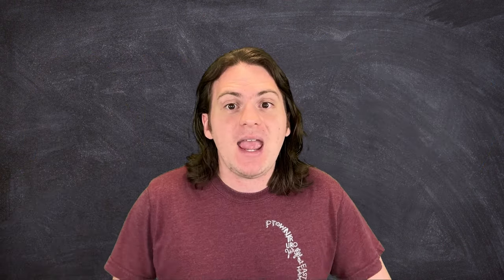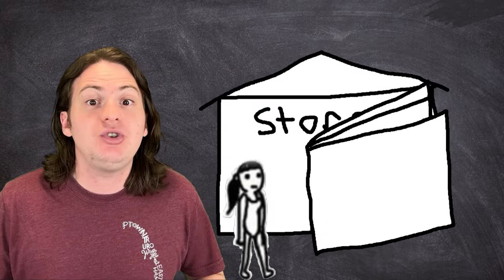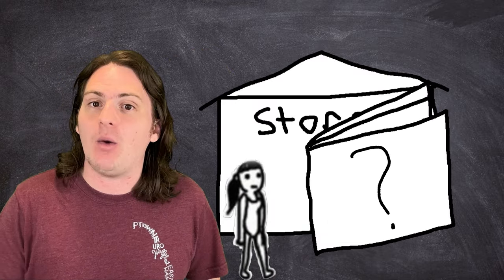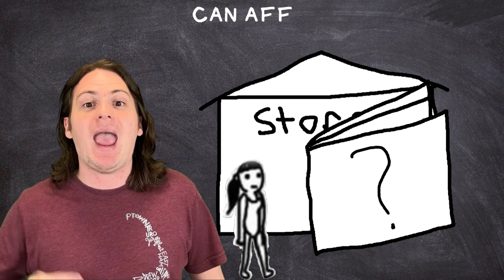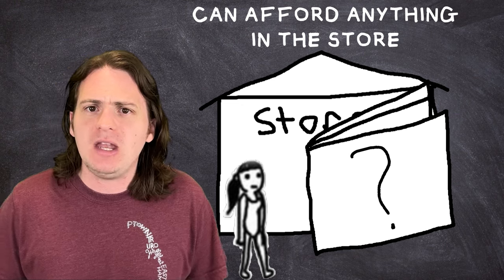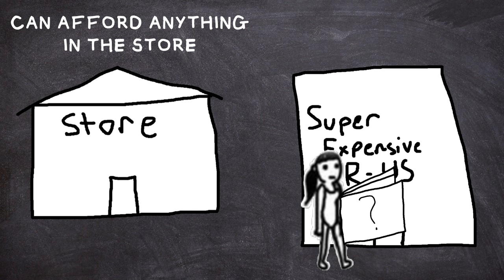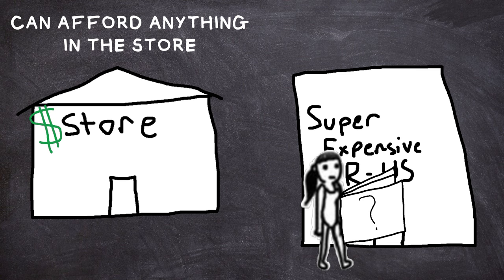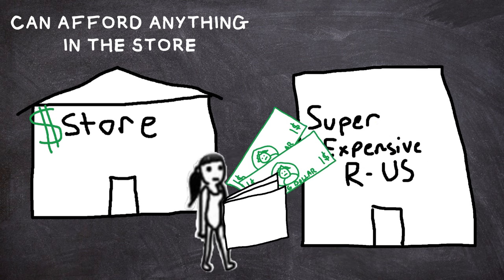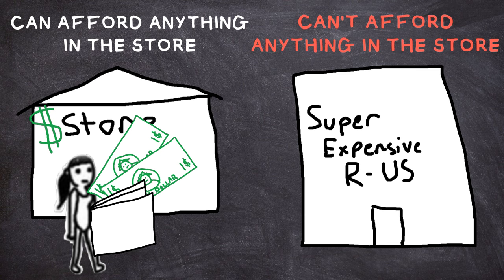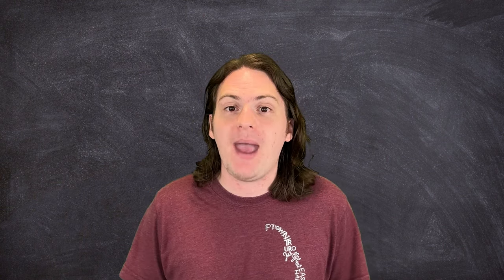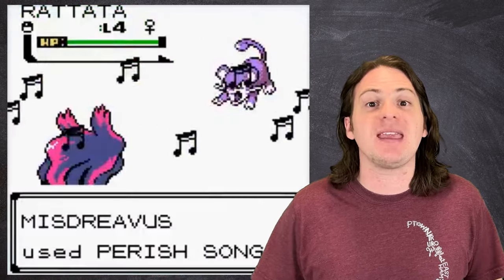Consider this example. Say I send you into a store with a wallet. You don't know how much money is in that wallet, but I tell you that it's enough to afford anything in this store. Now, that doesn't mean you could head over to super expensive R Us next door and buy yourself a new hot tub, because what I didn't tell you is that you're actually in the dollar store, and that wallet only contains two dollars. You can afford anything in this store, not anything in any store.